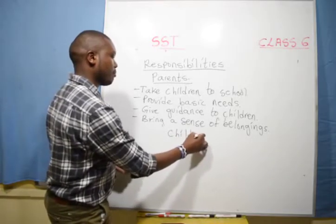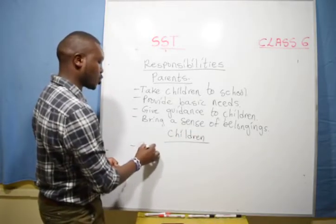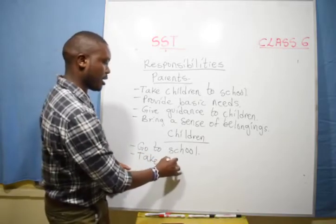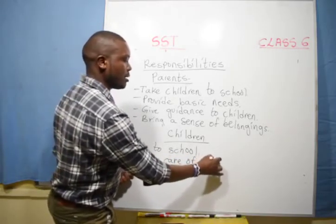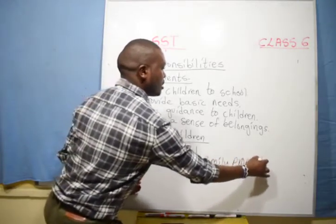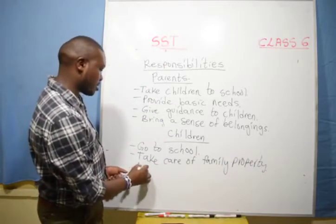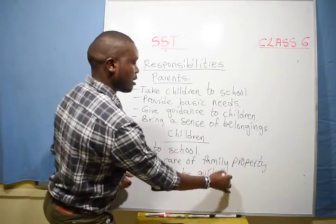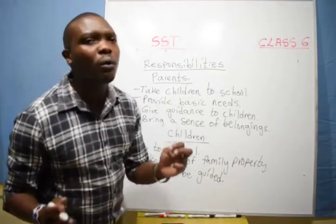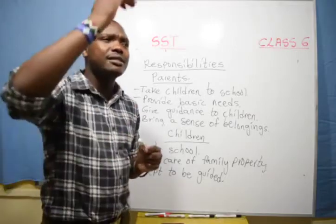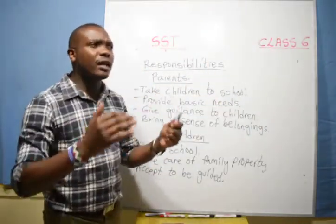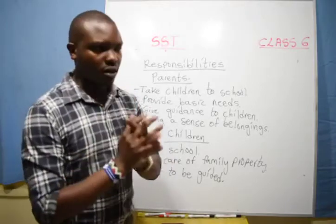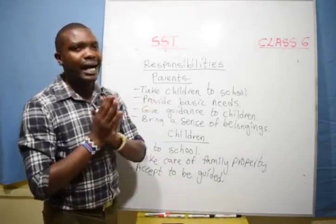What about children? One, go to school. Take care of family property. Accept to be guided — children must accept to be guided. When you are at home, allow your parents to guide you. Take care of the property at home. Those are the responsibilities of children. We shall continue with our next subtopic another day.